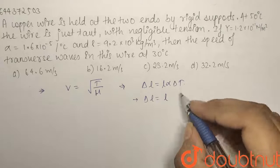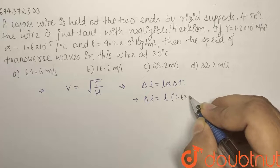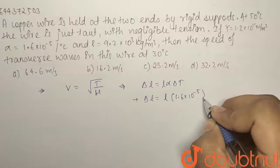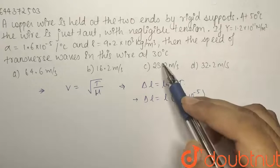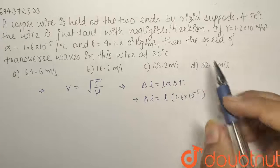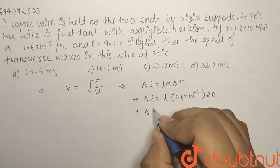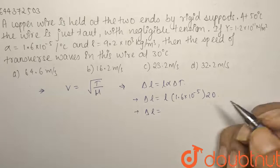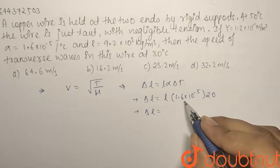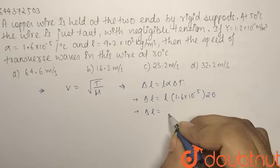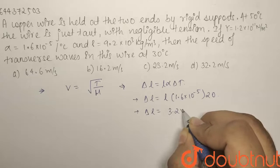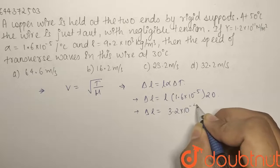So L × alpha, what is alpha? 1.6 × 10^-5 × delta T. Now, the temperature is decreasing from 50 to 30, so delta T equals 20. We have our delta L comes out to be equals to 3.2 × 10^-4 L. So we have found out the value of delta L.